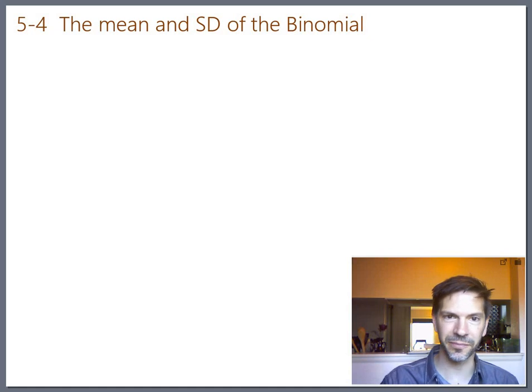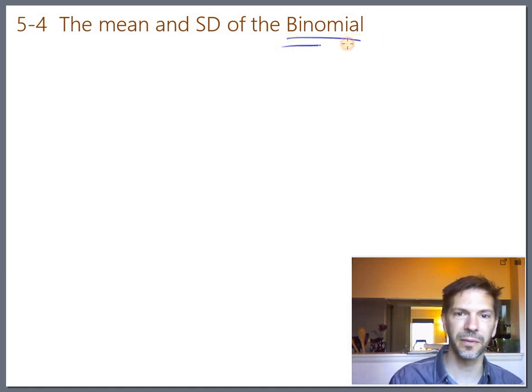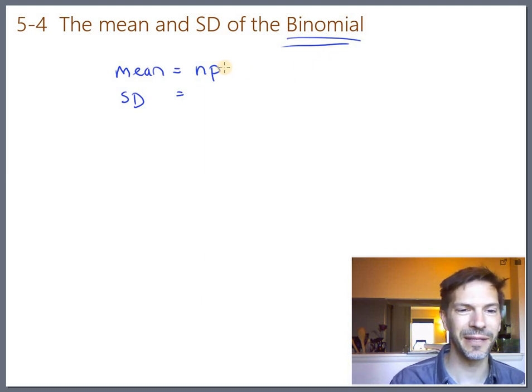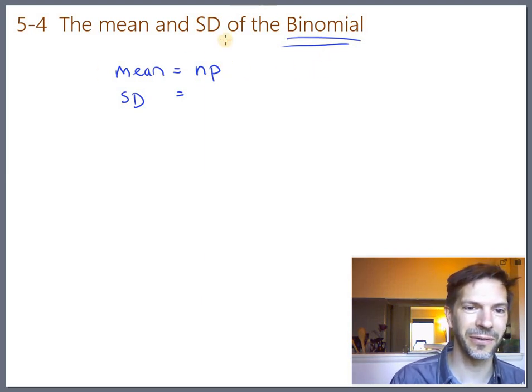There are formulas - if you have a binomial, then there's a formula for the mean and a formula for the standard deviation. The mean formula is pretty simple: n times p. Just to make the notation clear here, the n is the number of trials, how many times you flipped that coin, and p is the probability of success.